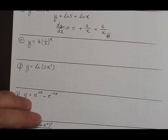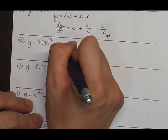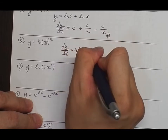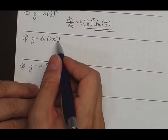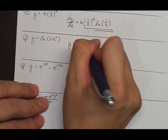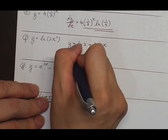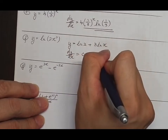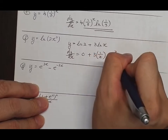Part e: if y equals 4 to the (1/x)... and part f: dy/dx equals 3/x, since dy/dx equals 0 plus 3·(1/x) equals 3/x.